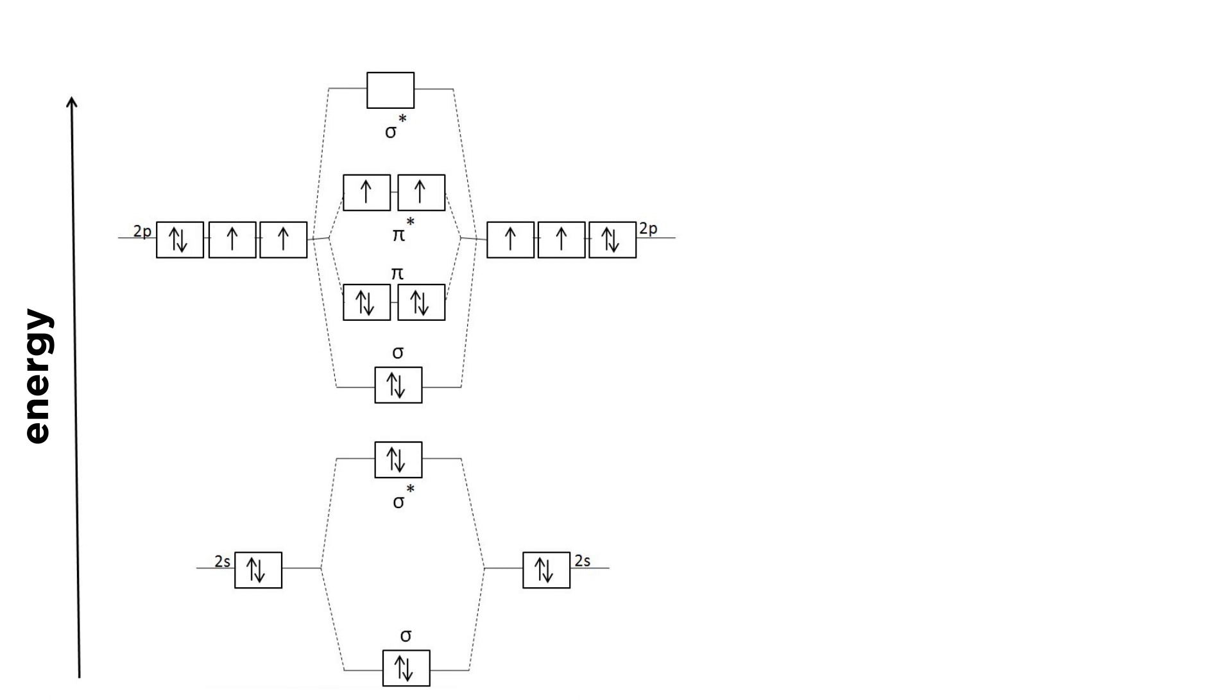If we go up to the electrons in the n equals two shell, we can see the two s orbitals combining in precisely the same way, and then the two p orbitals combining as follows, with the sigma bonding orbital, and then pi bonding orbitals, followed by the corresponding antibonding orbitals.